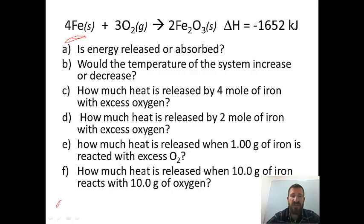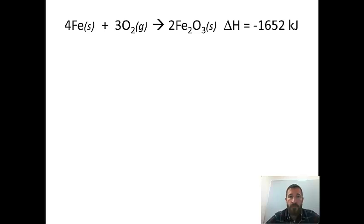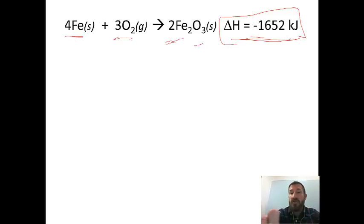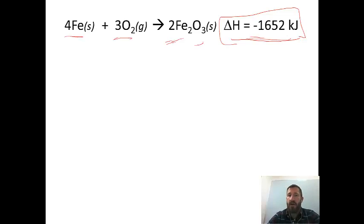We're going to try and answer six different questions with this reaction. We've got the reaction of iron and oxygen with iron oxide as a product. From this reaction we see it has a negative delta H, so that means it's exothermic. Per 4 moles of iron, 3 moles of oxygen, and 2 moles of iron(III) oxide produced, we get 1,652 kilojoules. But we don't always react exactly those amounts, so how much energy is produced with other amounts?